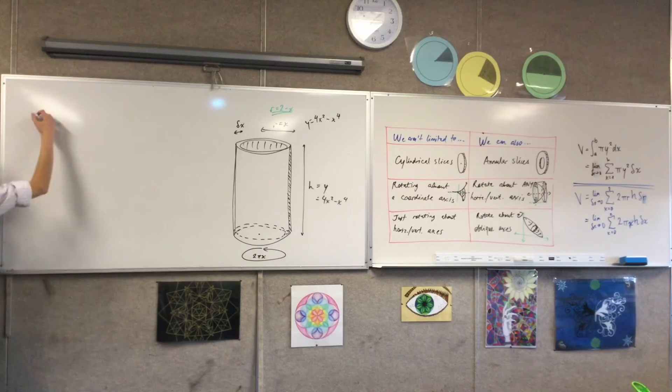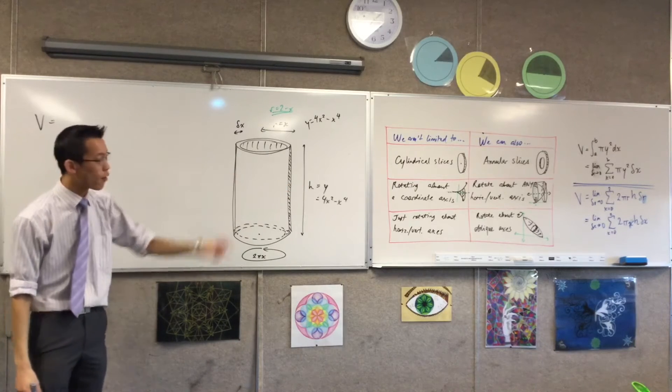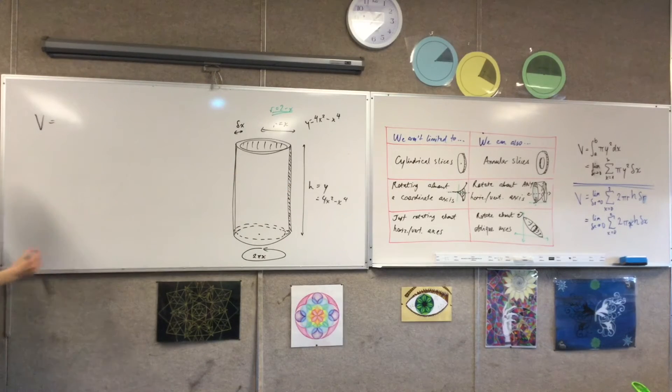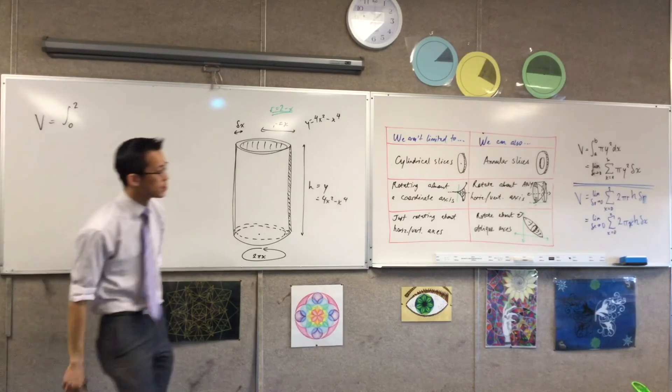Now we're ready to actually say the volume equals. Now I actually already have a couple of lines so I'm ready to continue from there and I'm going to convert this into an integral now. So I'm integrating from 0 to 2 and what is it that I'm integrating?